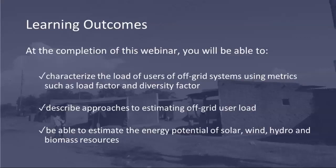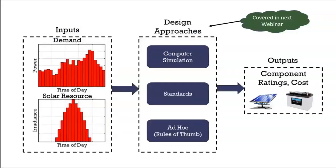Today we're going to cover how we characterize the electrical consumption of off-grid users, focusing primarily on mini-grid solutions to rural electricity access. We'll also describe approaches to estimating load and the energy potential of different types of power sources like wind, solar, hydro, and so on. Here is a brief overview of the design process for off-grid systems. We begin with inputs — most important are the estimations of the load and the energy resource — which then feed into one of several design approaches. The output is the ratings and specifications of the major components like batteries and inverters.